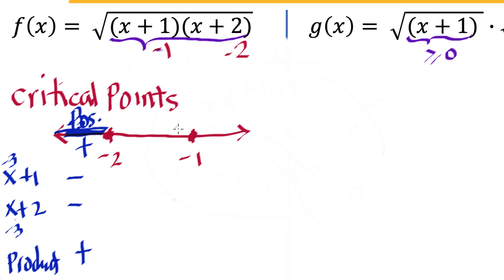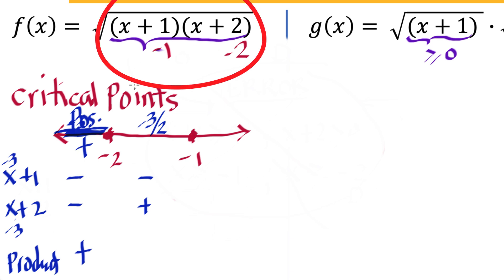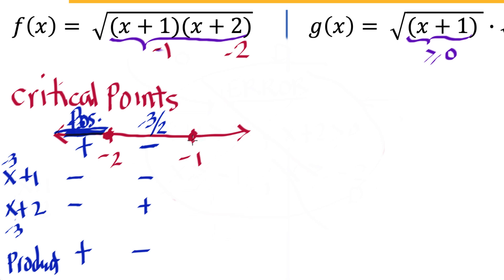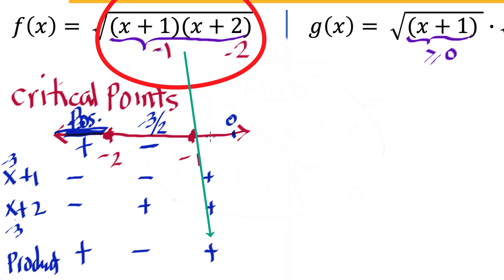Now take a value between -2 and -1, say x = -1.5. Then -1.5+1 is negative, but -1.5+2 is positive. So the product (x+1)(x+2) at x = -1.5 is negative times positive, which is negative. Now take a value greater than -1, say x = 0. Then (0+1) is positive and (0+2) is also positive, so their product is positive.